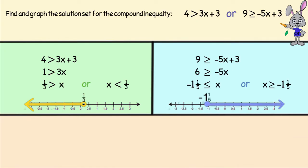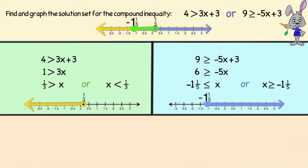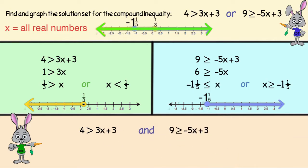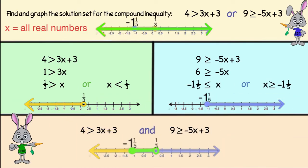Since the problem used the word 'or', the solution set is when we merge those two graphs, and you'll notice that it includes all possible numbers. What would be the solution if the problem had said 'and' instead of 'or'? Well, the solution set would have to make both inequalities true, so the solution graph would be where the two graphs overlap, and we would write that answer as negative 1 and 1 fifth is less than or equal to x, which is less than 1 third.